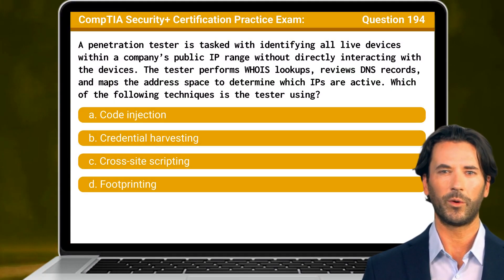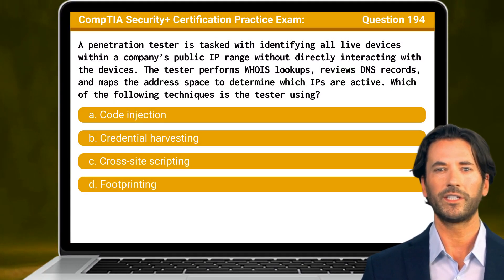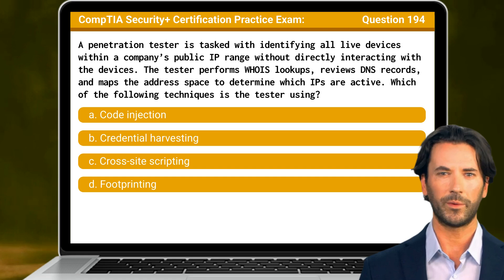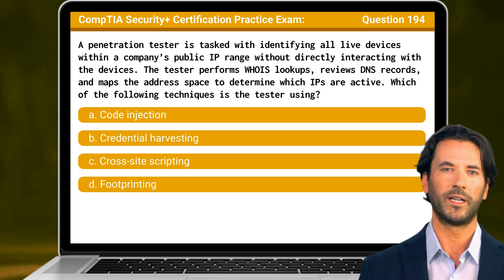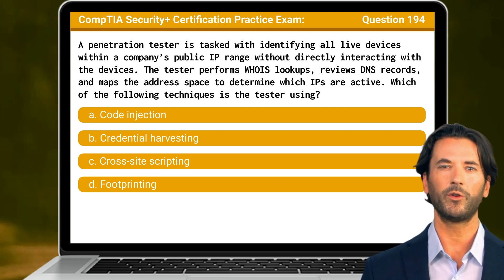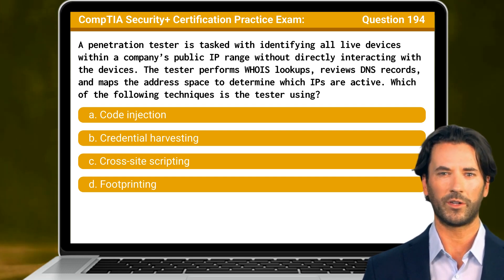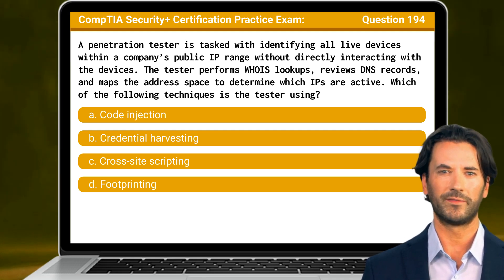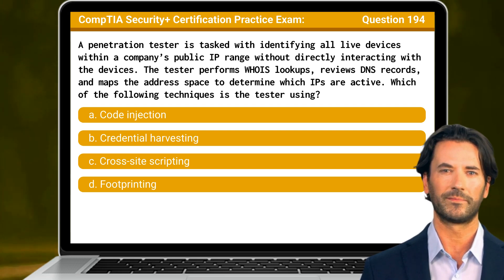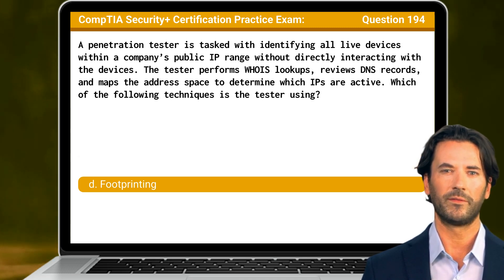Question 194. A penetration tester is tasked with identifying all live devices within a company's public IP range without directly interacting with the devices. The tester performs WHOIS lookups, reviews DNS records, and maps the address space to determine which IPs are active. Which of the following techniques is the tester using? The answer is D: Footprinting.